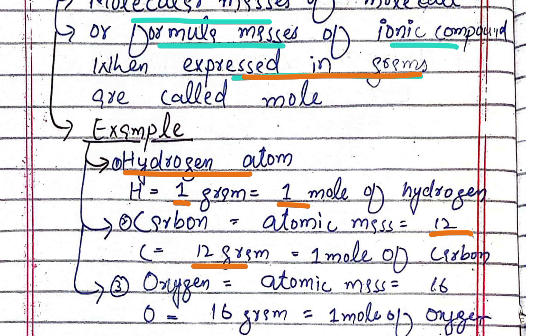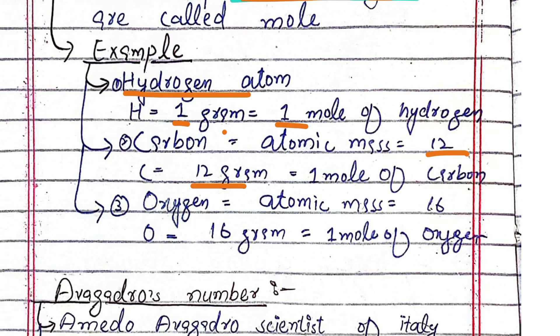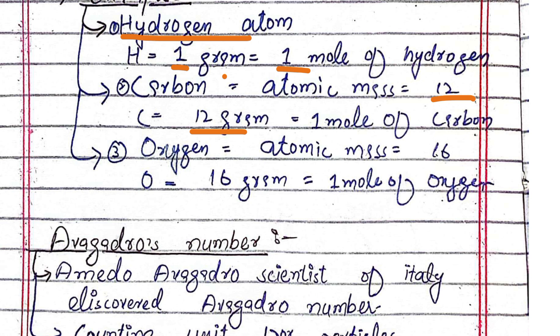For carbon, the atomic mass is 12 grams. 12 grams of carbon is equal to 1 mole of carbon.